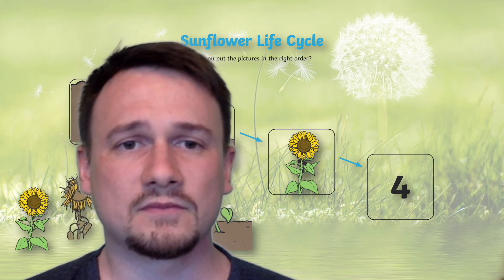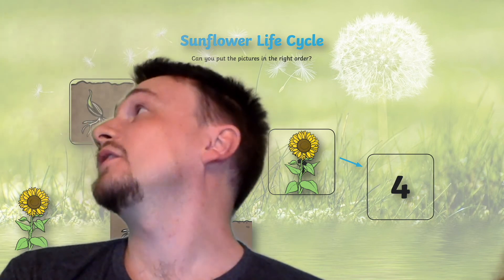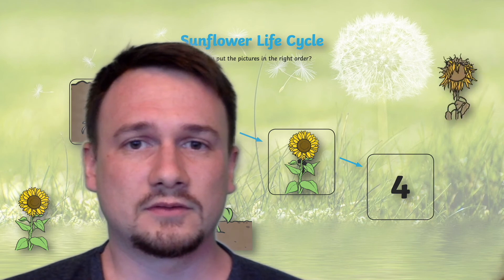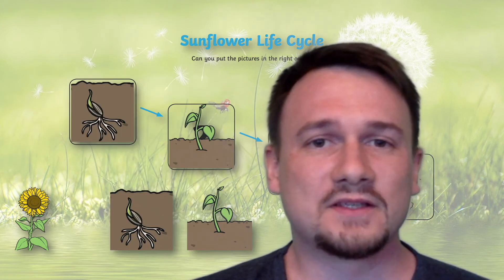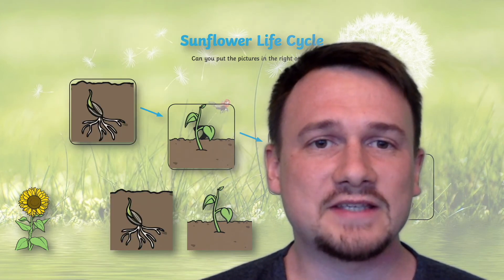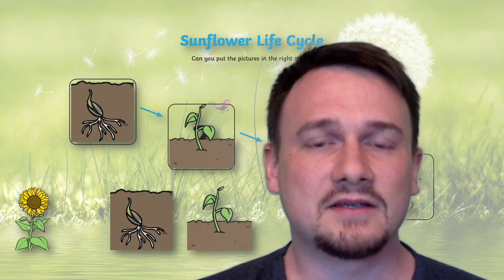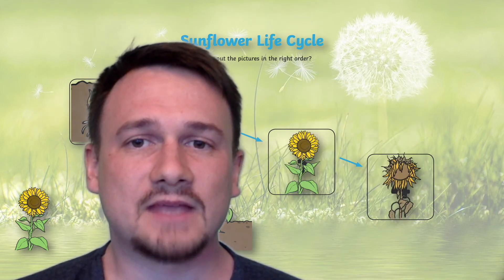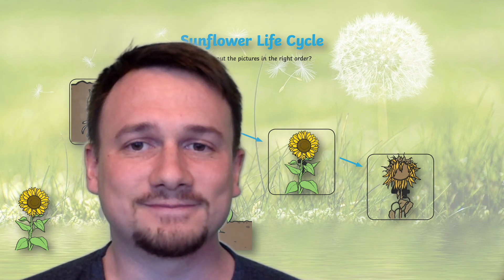That's right. So the life cycle of a sunflower is: the seed, the plant, the sunflower, and the dead sunflower. For today's worksheet, please look at the life cycle of a sunflower, cut out all the pictures and stick them in the right order. Can you do it?